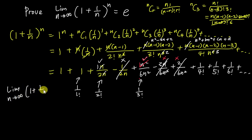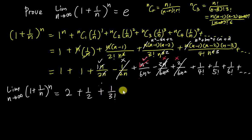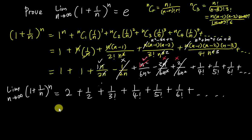Taking the limit as n goes to infinity, we focus only on the constant terms. We have: 1 + 1 + 1/2 + 1/3! + 1/4! + 1/5! + 1/6! + ⋯ So summing these up, I'll use a calculator to compute 1 + 1 + 1/2 + 1/6 + 1/24 + 1/120 + 1/720.